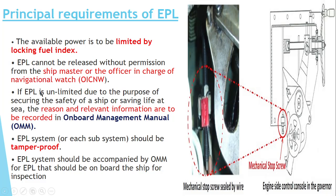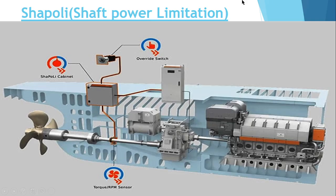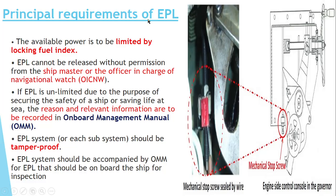If the EPL is unlocked due to the purpose of securing the safety of ship or saving life at sea, the reason and relevant information is to be recorded in the Onboard Management Manual. Whenever you are using shaft power limitation or EPL as a method for improving the EEXI, you have to maintain the record in a book called the Onboard Management Manual. This EPL is a tamper-proof arrangement and it is accompanied by an Onboard Management Manual.